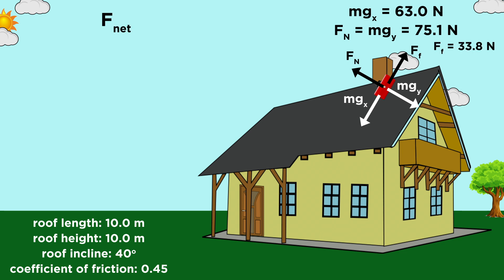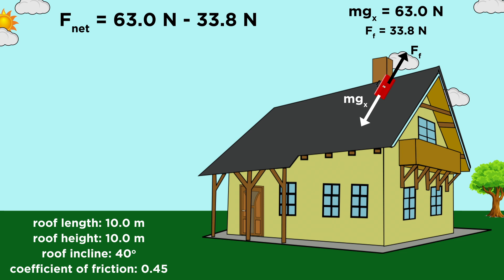Now to get the net force, these two vectors cancel, so we combine these, giving us sixty-three minus thirty-three point eight, or twenty-nine point two newtons, and there's our net force.